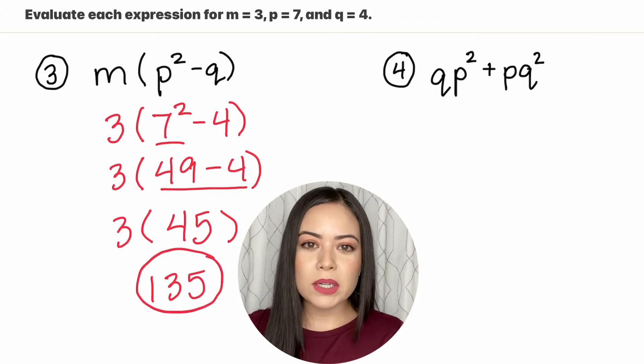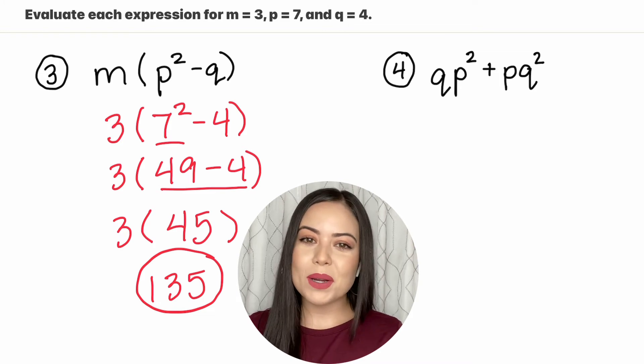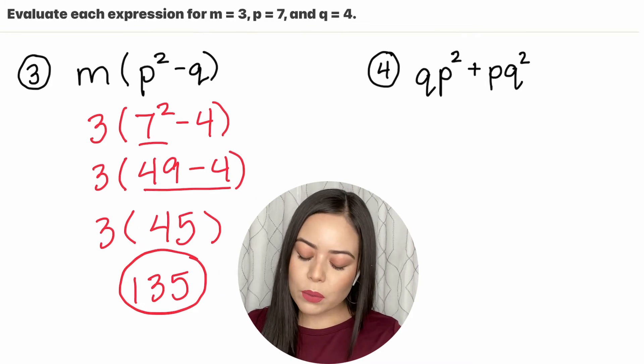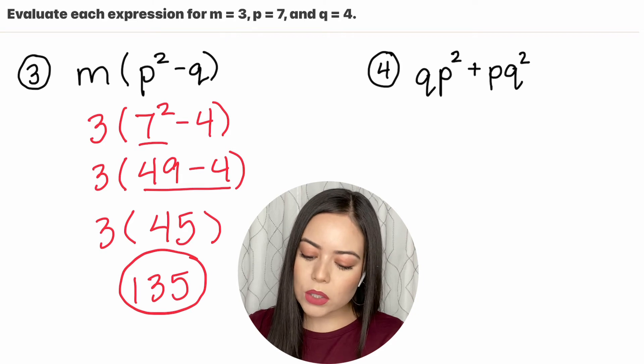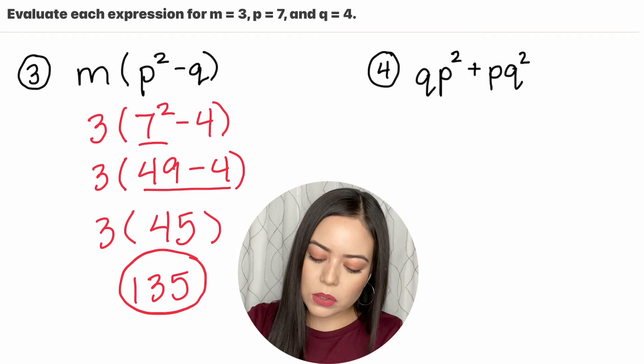If you want to try out question 4 all by yourself by pressing pause on this video and then coming back when you want to compare the answers you may do so. So for question 4 we have qp squared plus pq squared. It's a little tricky with the letters but we're going to substitute using parentheses.